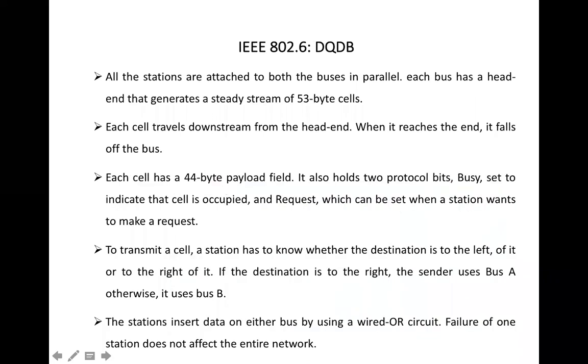In IEEE DQDB, all the stations are attached to both the buses. Each bus has a head end that generates a steady stream of 53 byte cells. Every bus has a head end that generates 53 bytes of a cell. The cell contains the control information as well as the payload. Each cell travels downstream from the head end. When it reaches the end, it falls off the bus. Initially, the cell is empty and at the last it is automatically dropped.